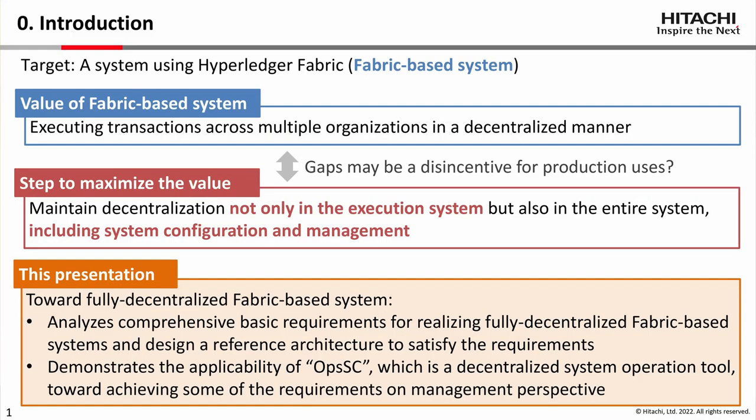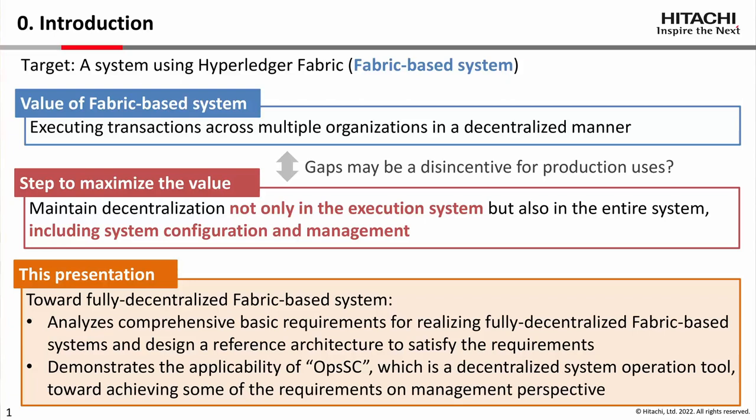Here is an introduction to this presentation. This presentation targets a system using Hyperledger Fabric. Hereafter we call Hyperledger Fabric just fabric, and also we call a system using fabric a fabric-based system. Fabric-based system provides the value of executing across multiple organizations in a decentralized manner. To maximize the value, it is essential to have decentralization not only in the execution system but also the entire system including system configuration and management.